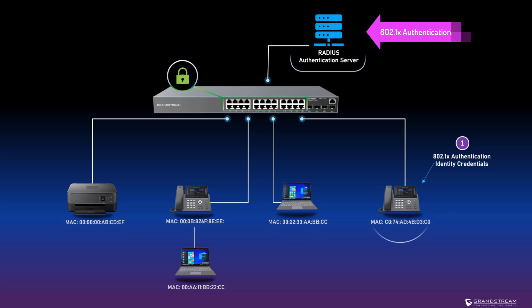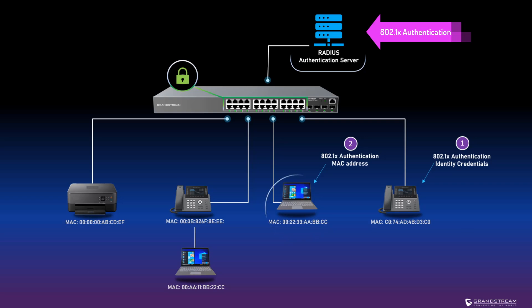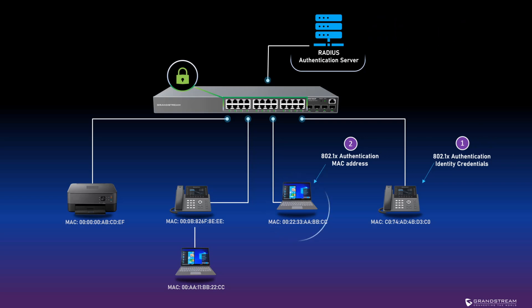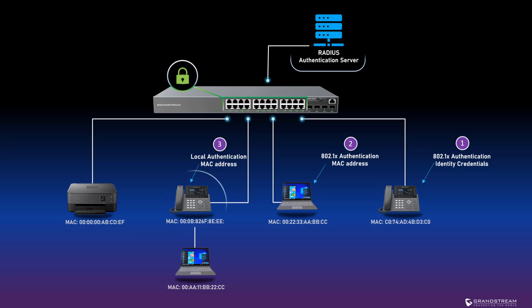The switch can also be configured to grant network access based on the device MAC address. With MAC-based authentication, the switch uses the connected device MAC address as the client identity and relays it to the RADIUS authentication server. The server should already have a list of MAC addresses that are allowed network access. In a situation where a RADIUS authentication server is not available, the list of authorized MAC addresses can be entered and stored locally on the switch. Using this method, the switch will become the authenticator.